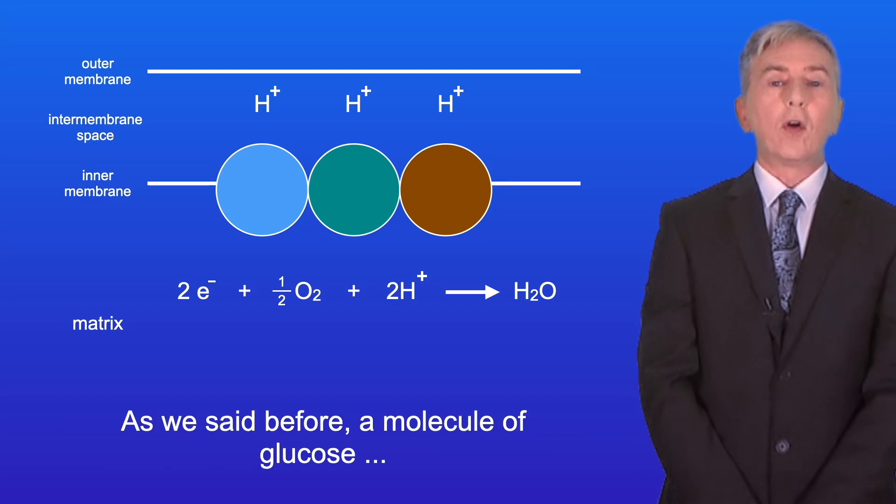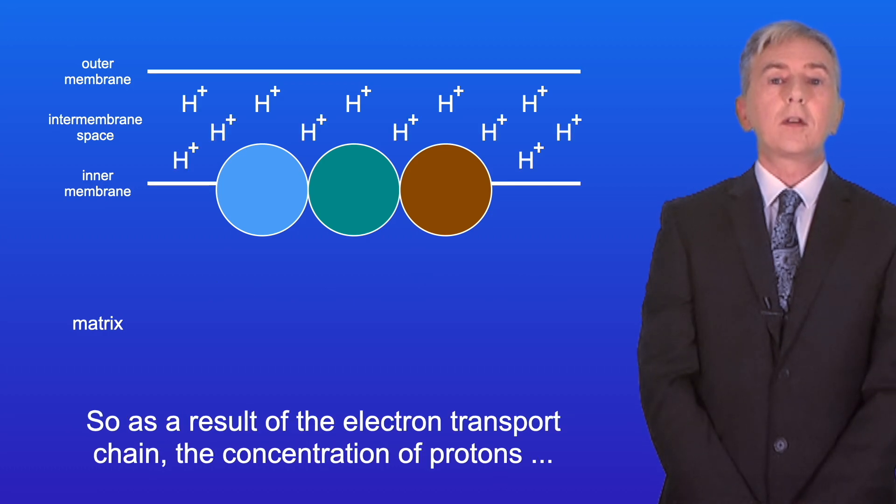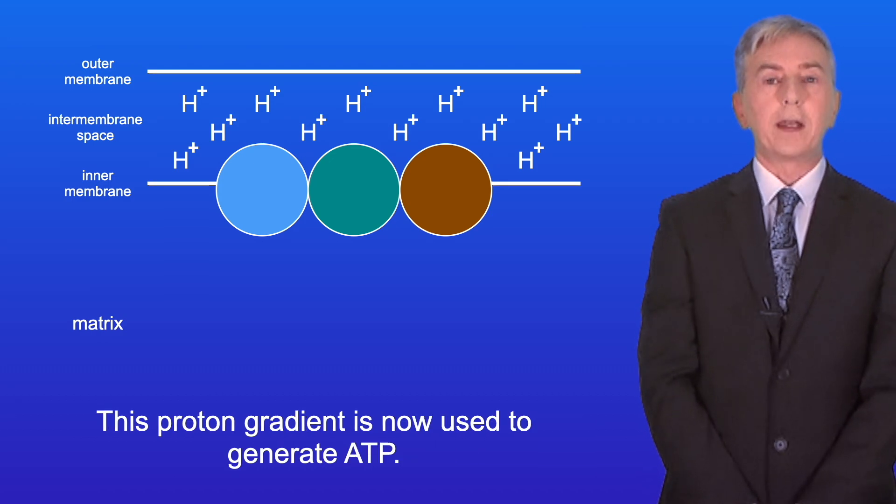Now as we said before, a molecule of glucose generates 10 reduced NAD molecules and 2 reduced FAD molecules. So as a result of the electron transport chain, the concentration of protons is much greater in the intermembrane space than in the matrix. This proton gradient is now used to generate ATP.